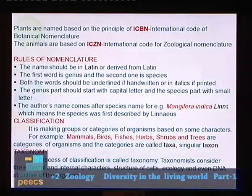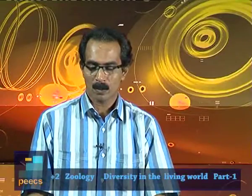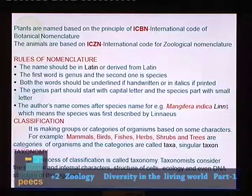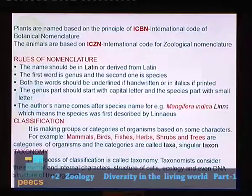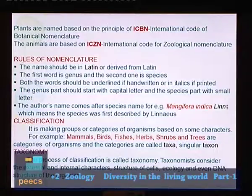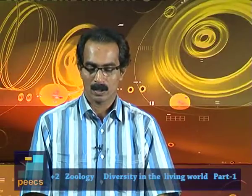Classification means making groups or categories of organisms based on some characters. We can classify animals into groups like mammals, birds, fishes, herbs, shrubs and trees. These categories are called taxa — singular taxon. For example, mammals is a taxon. The process of classification is called taxonomy. Taxonomists consider external and internal characters, cell structure, ecology and even DNA structure for classification.